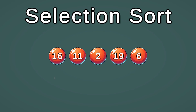How selection sort algorithm works is we start with the first position. In our first position we have 16, and we need to find the smallest number in our array so that we can place the smallest number in this position.